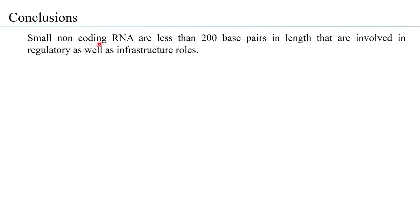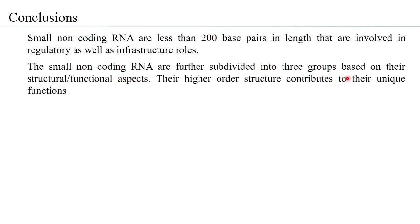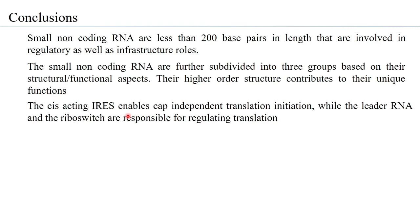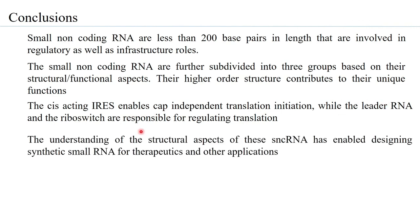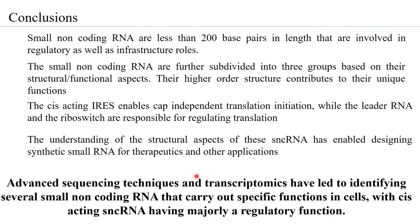In conclusion, small non-coding RNA are less than 200 base pairs in length and are involved in both regulatory and infrastructural roles. They are subdivided into three groups based on structural and functional aspects, with their higher-order structure contributing to unique functions. The cis-acting IRES enables cap-independent translation initiation, while leader RNA and riboswitches are responsible for regulating transcription. Understanding the structural aspects of these small non-coding RNA has enabled designing synthetic small RNA for therapeutics and other applications. Advanced sequencing techniques and transcriptomics have led to identifying several small non-coding RNA that carry out specific functions in cells, with cis-acting small non-coding RNA having majorly a regulatory function.